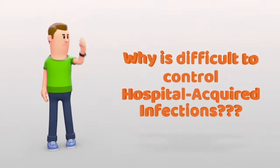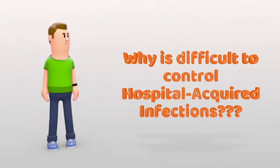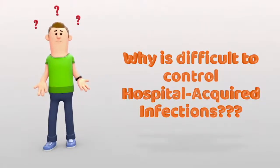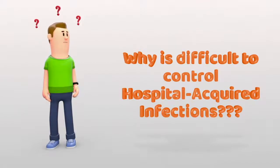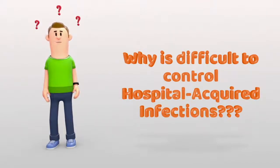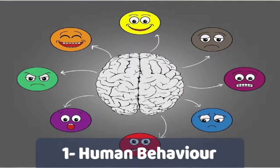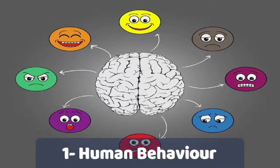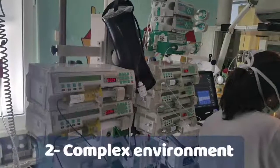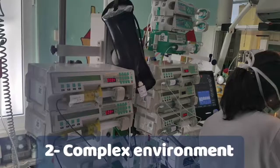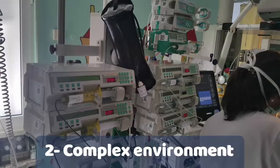We know that safety motivation and good values already exist in hospitals, so why are hospital acquired infection rates difficult to curb? Mainly because preventive guidelines don't address the problem of human behavior, leading to poor compliance, and the complex and dynamic hospital environment increases the risk of errors due to cognitive overload.